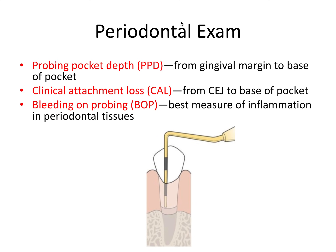After the tooth exam, we do the periodontal exam, which is particularly important for periodontics. There are three most objective periodontal measurements, each with a handy three-letter acronym. Probing pocket depth, or PPD, is measured from the gingival margin to the base of the pocket. Here you see a periodontal probe measuring in increments of three millimeters. If we measure from the gingival margin to the base of the pocket, we can see that this is six millimeters total — so our probing pocket depth would be six millimeters.